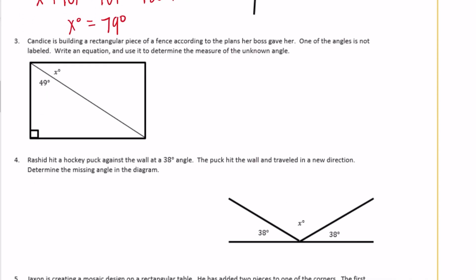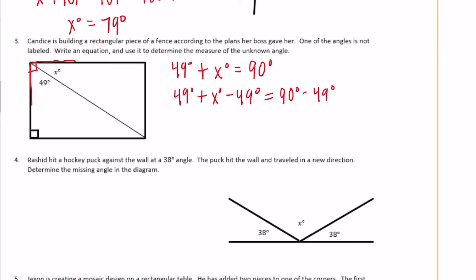Number 3: Candace is building a rectangular piece of fence. One of the angles is not labeled. Write an equation and use it to determine the measure of the unknown angle. It's a rectangle, so this is a right angle. So 49 degrees plus x degrees equals 90 degrees. Subtract 49 degrees from both sides: x equals 90 minus 49, which is 41 degrees.